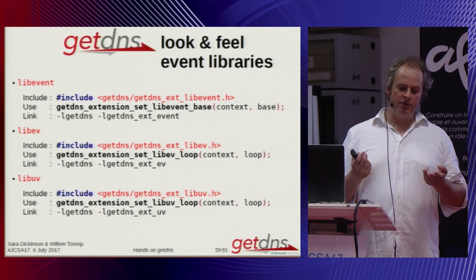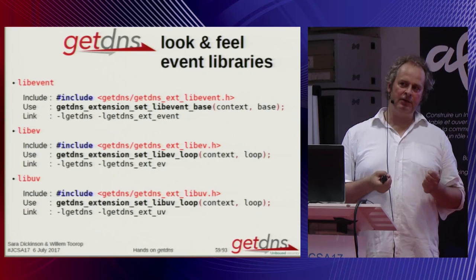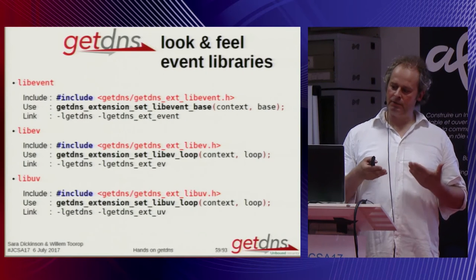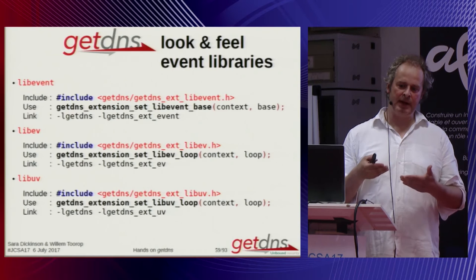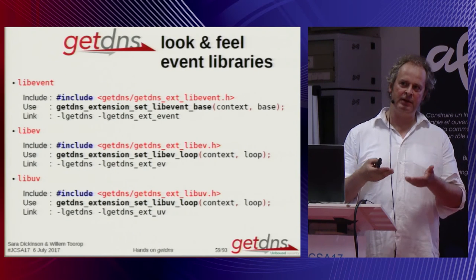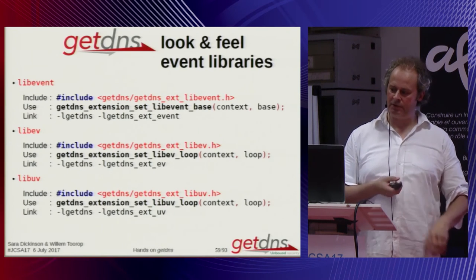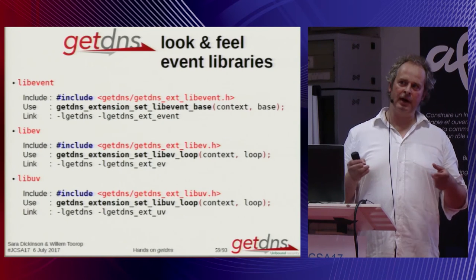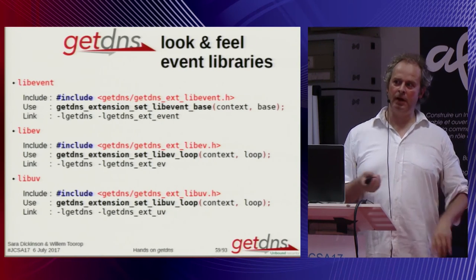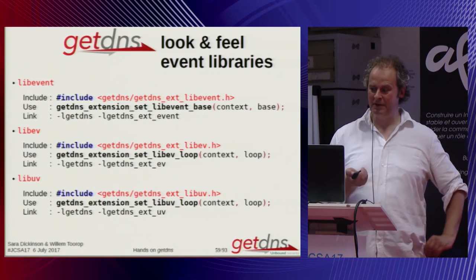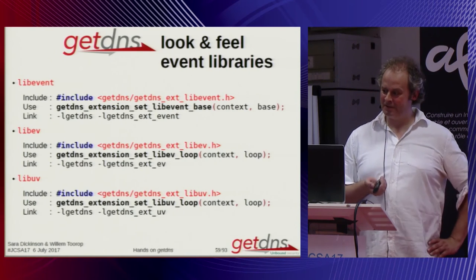There are three extensions delivered with GetDNS that let you pick the asynchronous event loop to use with GetDNS. GetDNS also has hooks to create your own asynchronous event loop.